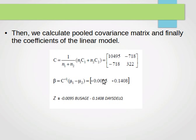We plug all these values in and find that the beta vector of the coefficients looks like this, with two values because we have two variables. Then we plug it in the formula for Z, the straight line that we're looking for. Z equals 0.0095 times BUSAGE minus 0.1408 times DAYSDELQ.